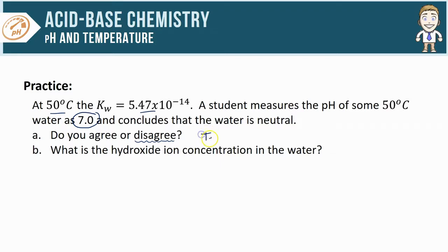We could even go a step further and say that because the temperature is increased, the neutral pH would have decreased to somewhere less than 7. So the fact that we're getting a pH of 7 tells me that this solution is actually basic.